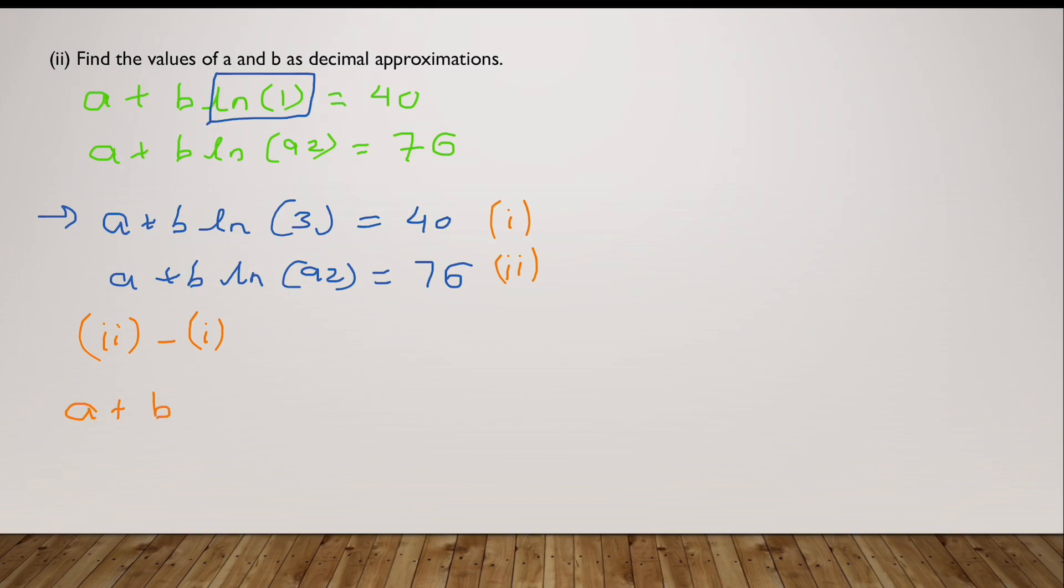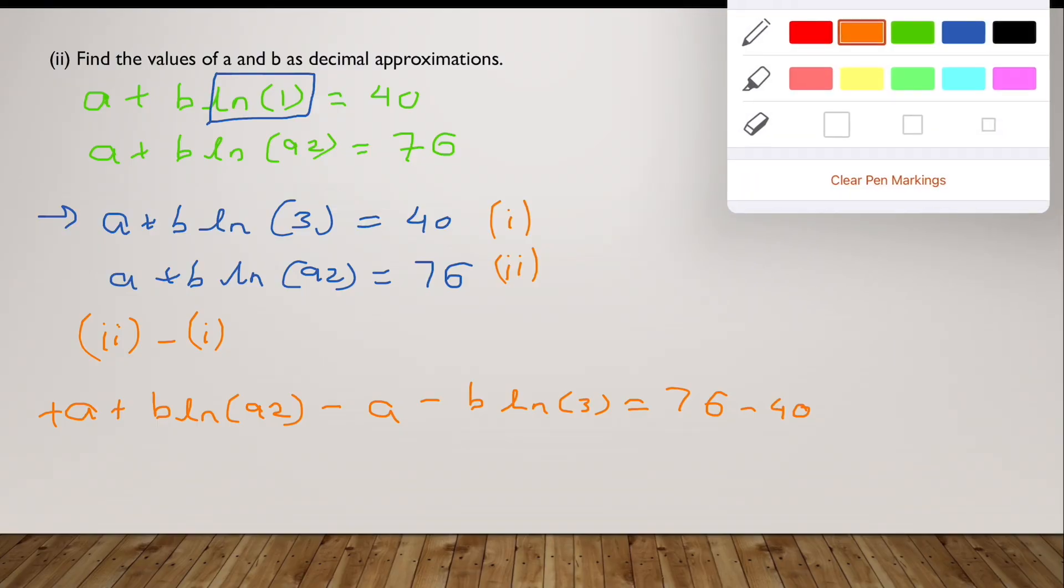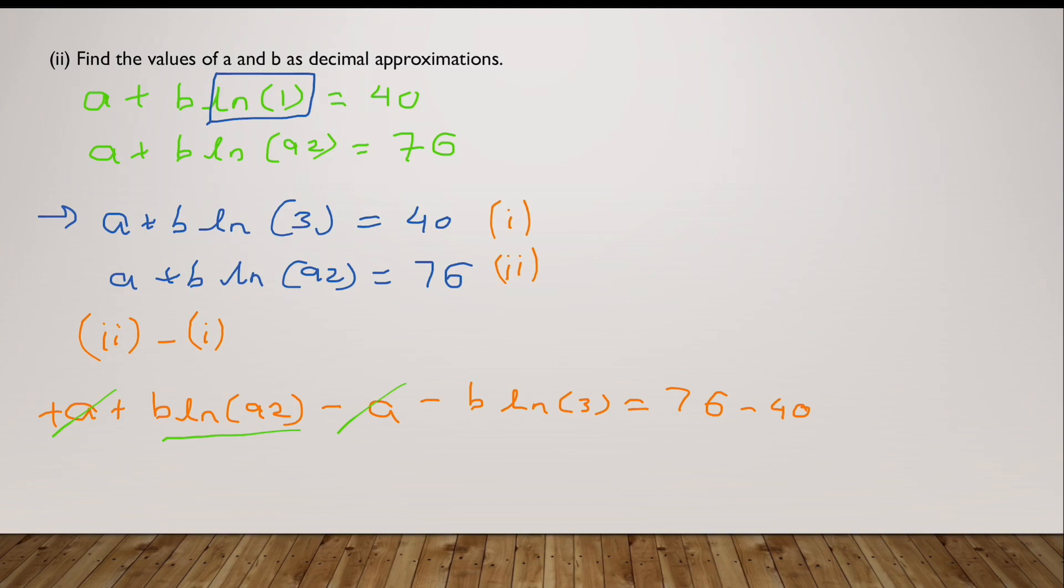I'll have the second equation first. So it will be a plus b times ln(92) minus a, since the negative sign goes into the entire bracket, minus b times ln(3). And I have on the right-hand side 76 minus 40. Now if you look at it, we have a positive a and a negative a, so I'll cut off the negative and positive a. And if I take the b common out of here, I have b times [ln(92) minus ln(3)]. 76 minus 40 would be 36. Now I have b equals 36 over—I move the entire ln(92) minus ln(3)—to the other hand.